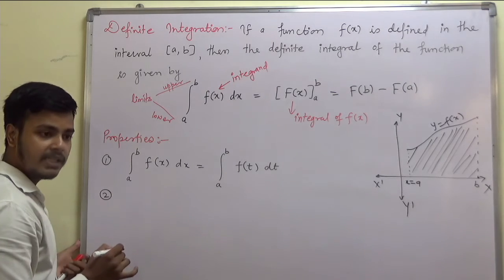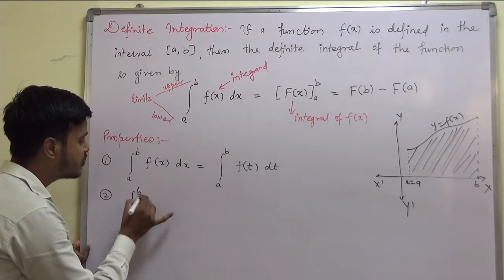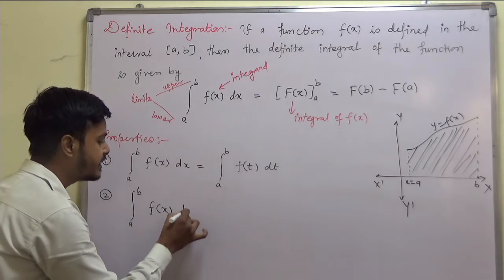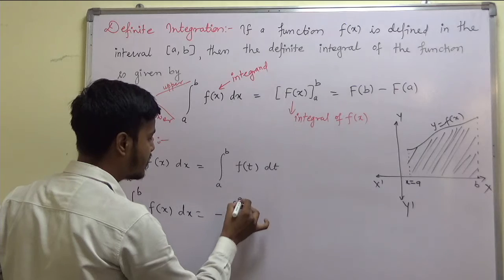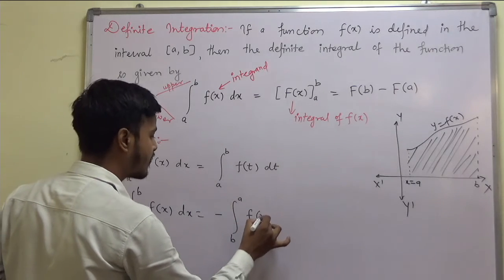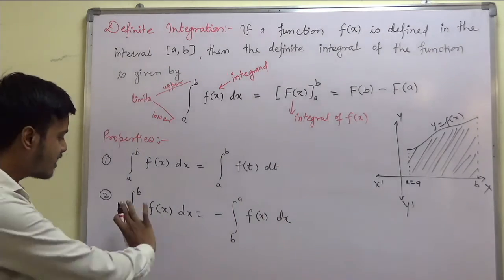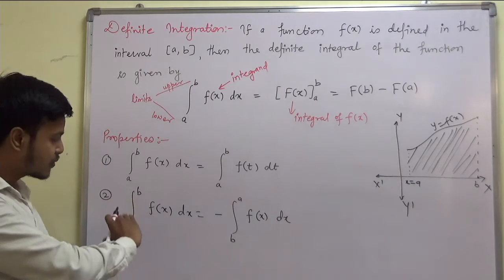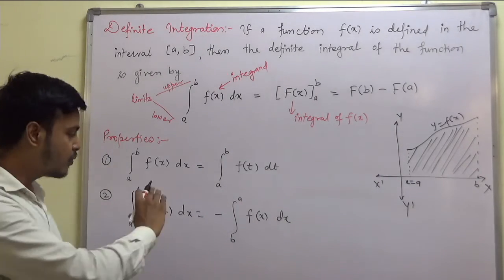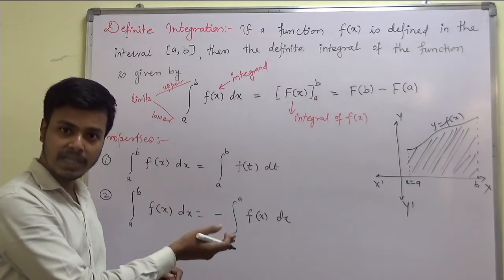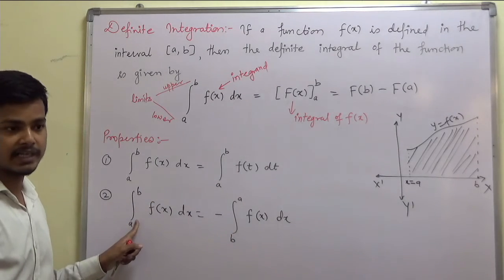The second property is: integral from a to b of f(x) dx equals minus of integral from b to a of f(x) dx. So you can change the limits from upper to lower or lower to upper by giving the minus sign. If you do the process two times, minus times minus becomes plus and you get the original back.